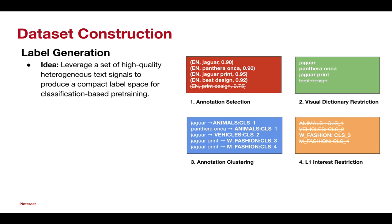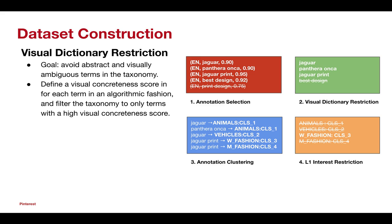Our label generation process is based on a set of heterogeneous text signals and yields a compact label space for classification-based pre-training. We leverage high-confidence predicted keywords for each image and propose two key improvements. First, we restrict keywords to those present in the visual dictionary. The visual dictionary is defined to consist of terms with high visual concreteness score. This visual concreteness score is determined in a fully algorithmic fashion and is discussed in further detail in the paper. This enables us to reduce the occurrence of abstract and visually ambiguous terms in the taxonomy.